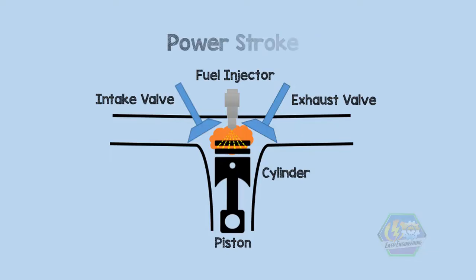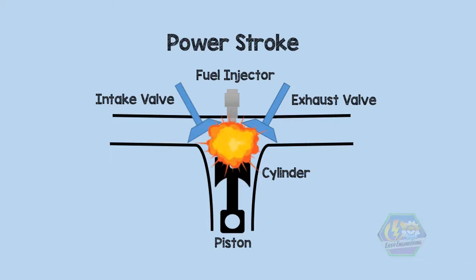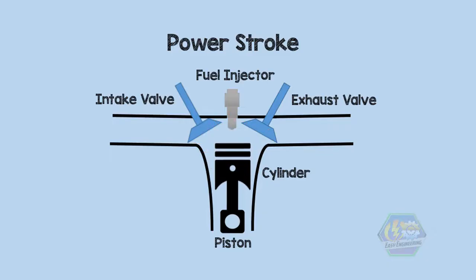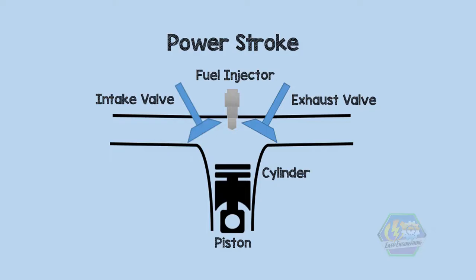Third is the power stroke. As the fuel absorbs heat from the compressed air, it vaporizes — and boom! There goes your combustion. The combustion forces the piston to move down, rotating the crankshaft and of course your car's wheels.